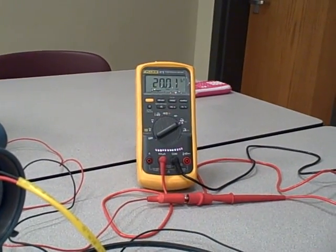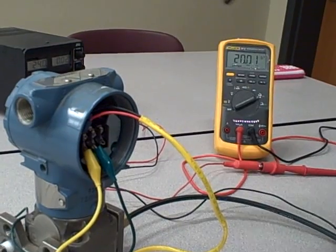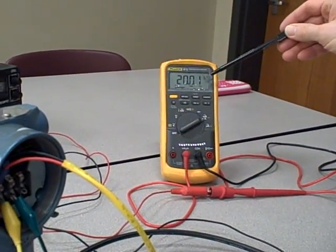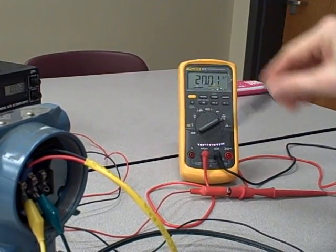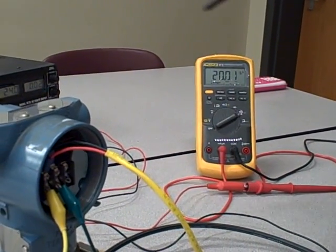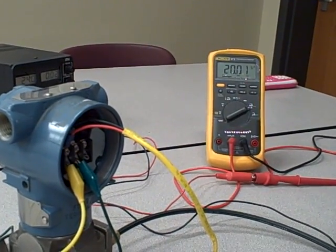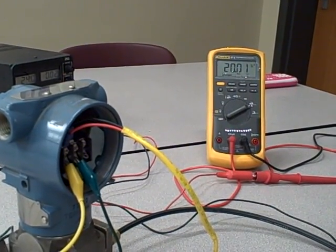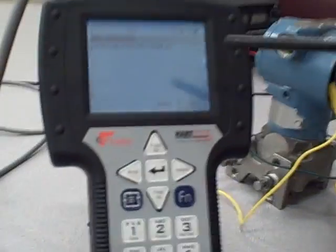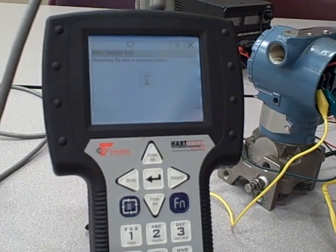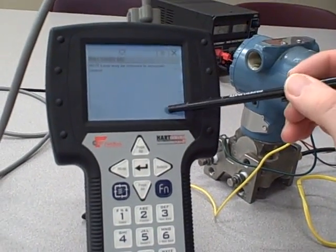As far as this transmitter knows, it is actually outputting 20.00 milliamps. If we see a discrepancy such as this, 20.01, it may mean that our testing instrument is out of calibration, or it may mean that the transmitter is actually outputting a little bit more current than it thinks it is, in which case we can fix that with what's called a digital trim. Let's go back and abort that test and explore some of the other menus.